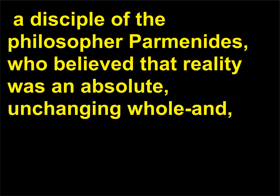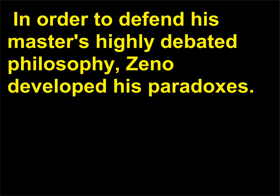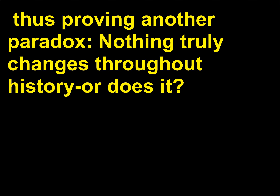Zeno was a disciple of the philosopher Parmenides, who believed that reality was an absolute, unchanging whole and thus that many things we take for granted, such as motion, were simply illusions. In order to defend his master's highly debated philosophy, Zeno developed his paradoxes. Most of Zeno's paradoxes are still highly debated by modern mathematicians and philosophers — thus proving another paradox: nothing truly changes throughout history, or does it?